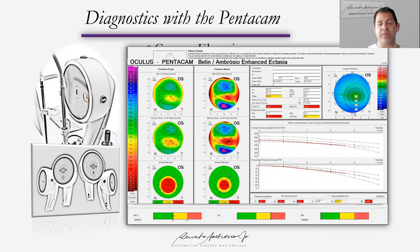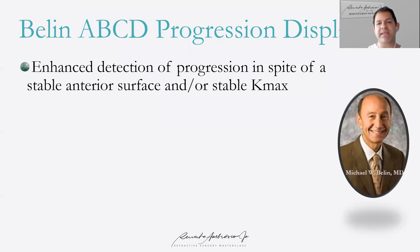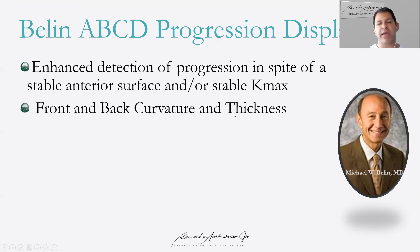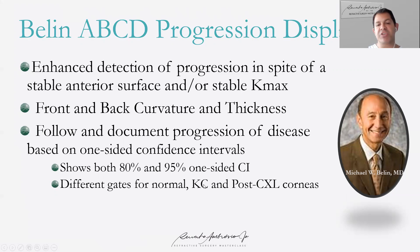It's been over 10 years that we started working and collaborating with Michael Belin on the enhanced approach, which uses front and back elevation and thickness profile. Michael has done a very nice contribution on the ABCD progression display, which is an enhanced detection for progression despite sometimes a stable anterior surface — because it considers front and back curvature and also thickness. The contribution is related to interpretation using the 80–95% confidence intervals of the measurement, so we can rely on the scientific data to determine if a change is significant. We have different gauges for normal, mild, and moderate keratoconus cases.